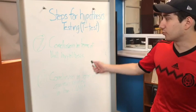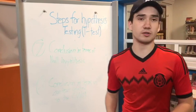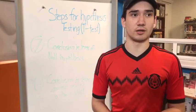In step number seven, you write if you accept or reject your null hypothesis. And in step number eight, you write a conclusion or a statement about the claim of your problem.